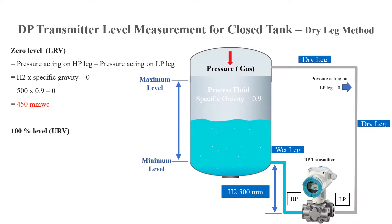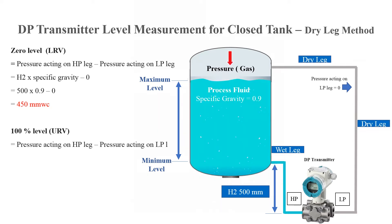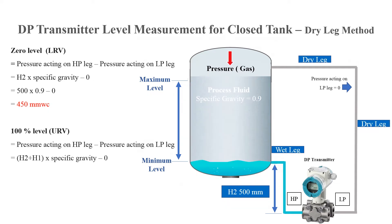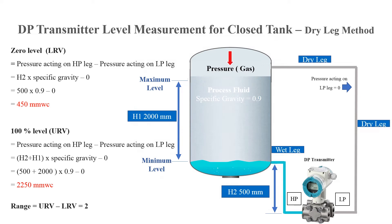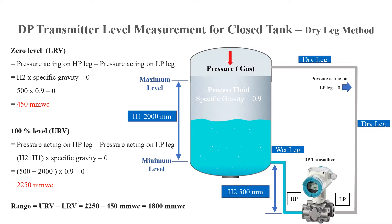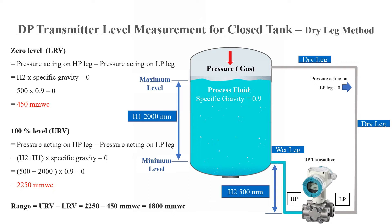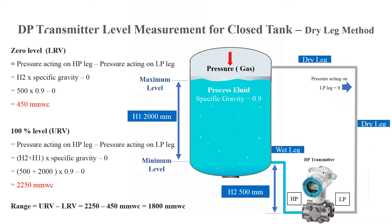The upper range value will be as follows: pressure acting on the HP leg minus pressure acting on the LP leg equals h2 plus h1, multiplied by the specific gravity of the measured liquid minus zero, so the result will be 2250 millimeters water column. Delta P range equals upper range value minus lower range value equals 1800 millimeters water column. You may convert the lower and upper range values to inches H2O and set them into the DP transmitter.